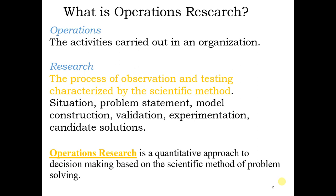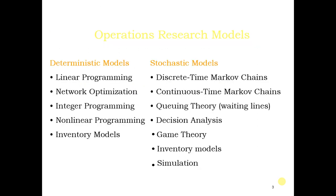There are two types of models available in RMT or operations research: deterministic models and stochastic models. Deterministic models deal with known or certain data, while stochastic models deal with randomized or unknown data. Values from a deterministic model are exact, whereas values from a stochastic model are approximate — expressed as probabilities.